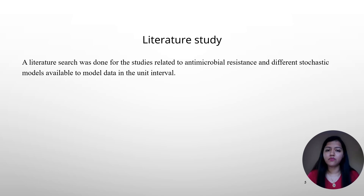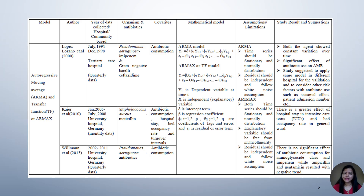To understand the stochastic models already used in the area of AMR, I conducted a literature search. Lopez Lozano et al. in the year 2000 first introduced the autoregressive moving average model in the area of AMR. They collected monthly data on antimicrobial resistance rate from July 1991 to December 1998, concentrating on Pseudomonas aeruginosa resistant to imipenem and gram-negative bacillus resistant to ceftazidime, considering antibiotic consumption as a covariate.